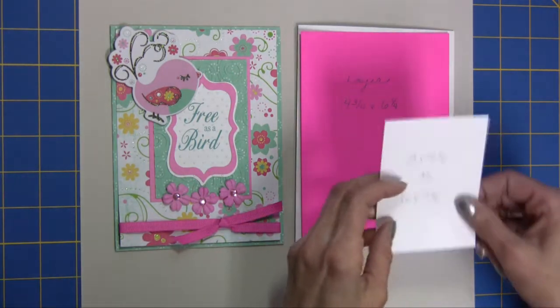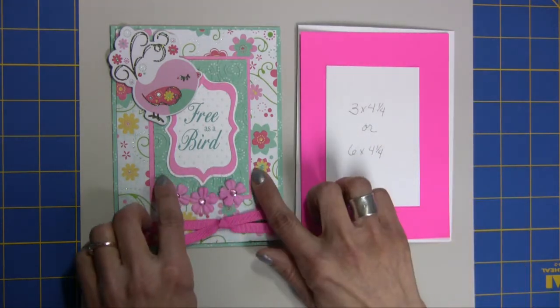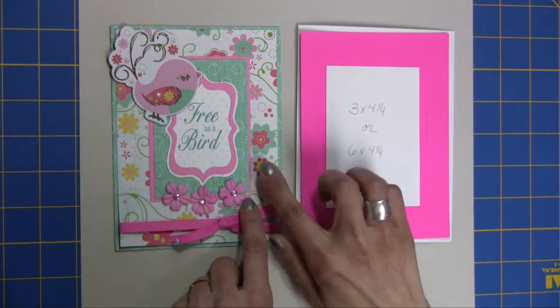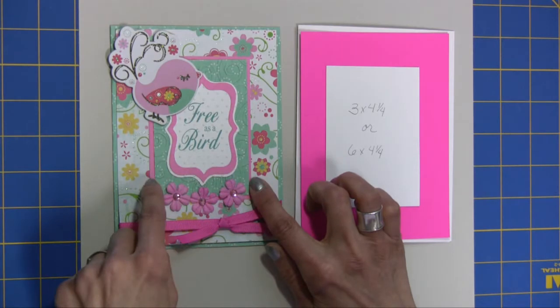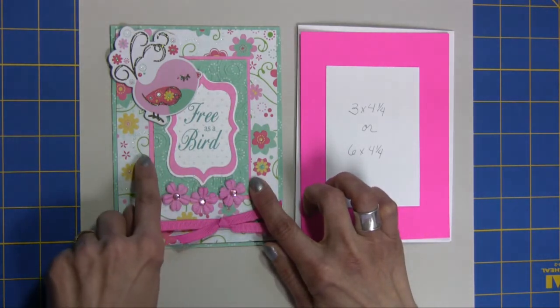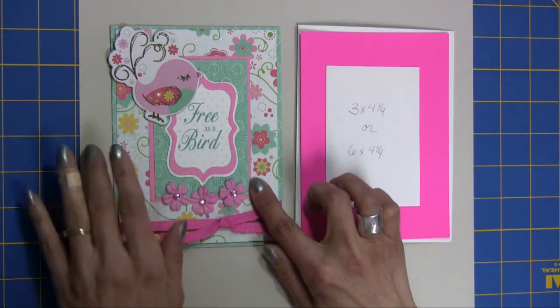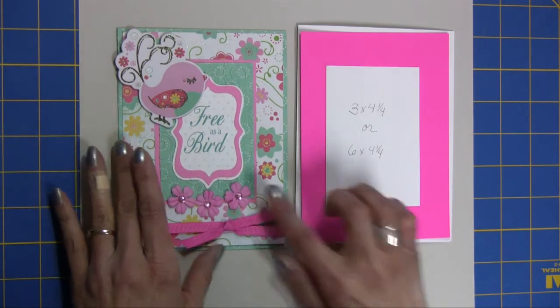Our next layer is going to be four and a fourth. This particular layer I made out of pink paper that was already embossed. You could use Swiss dots to go ahead and emboss that.